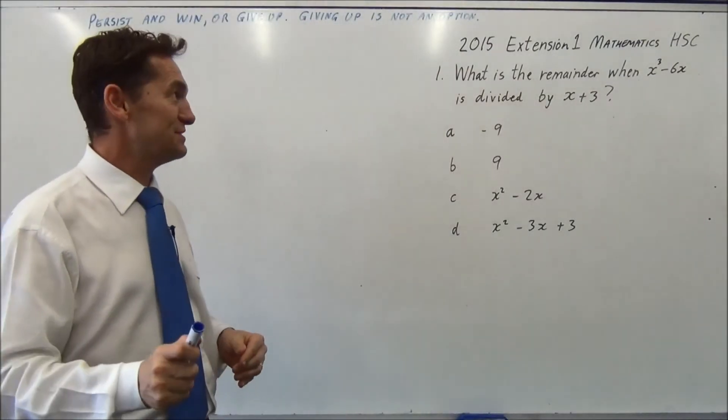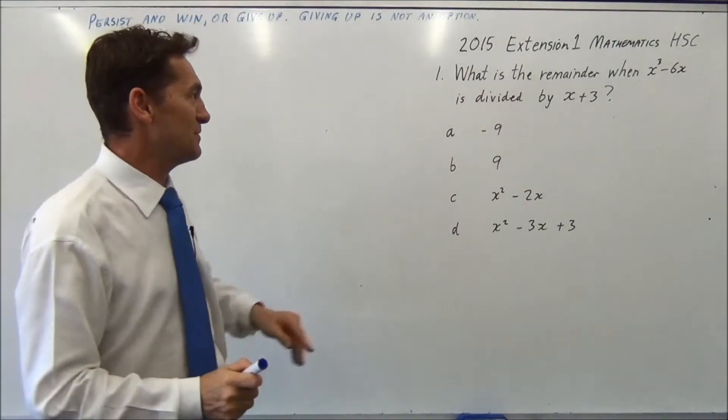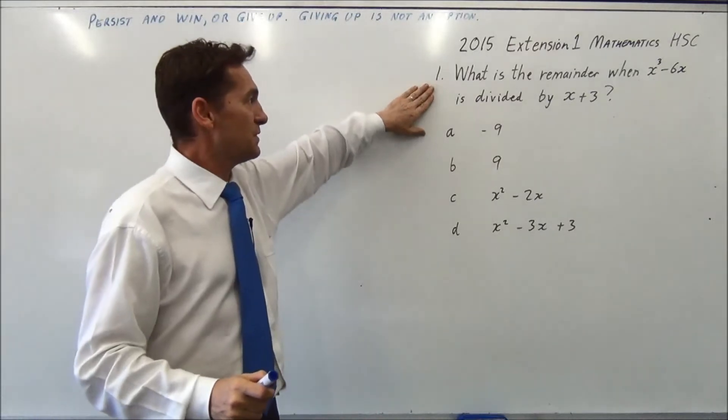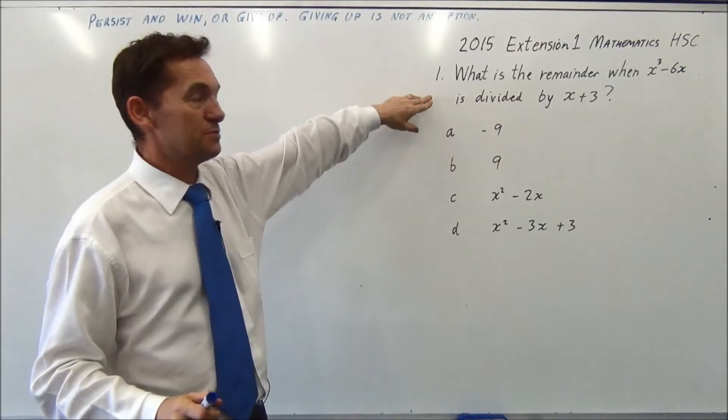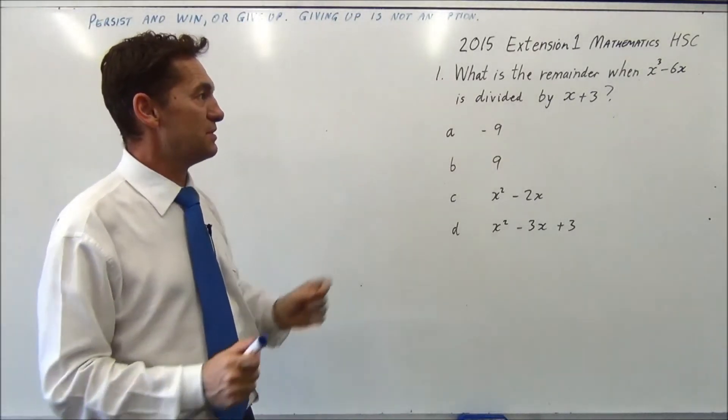This is the 2015 extension one Maths HSC and this is to start at question one. What is the remainder when x cubed minus 6x is divided by x plus 3?